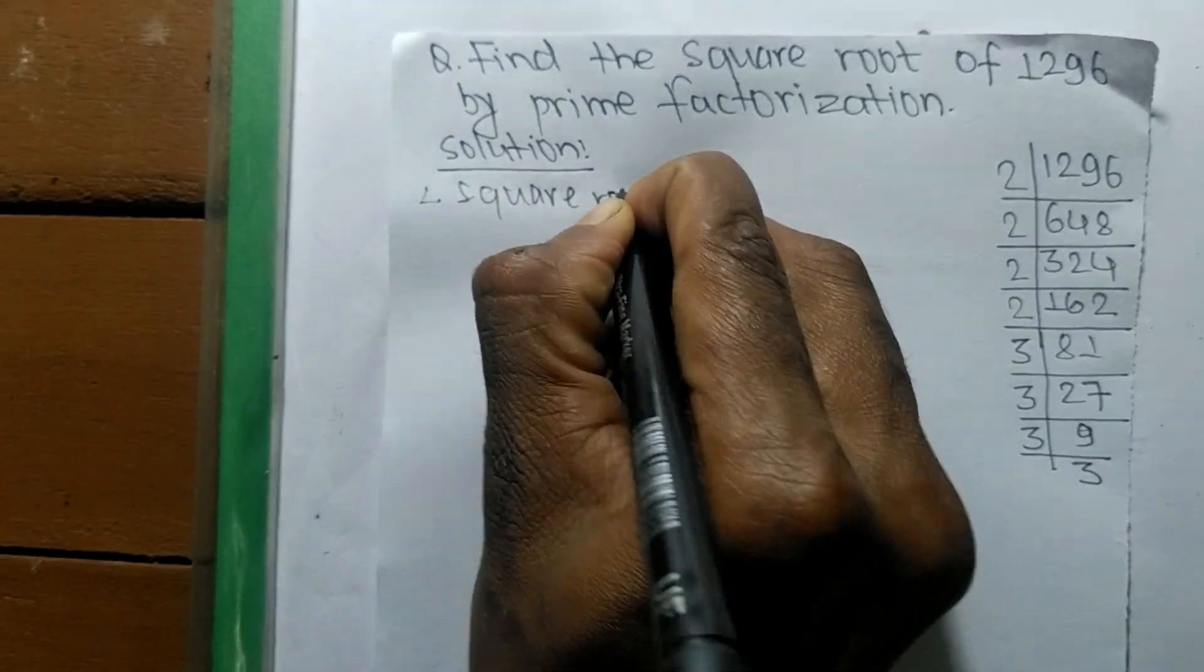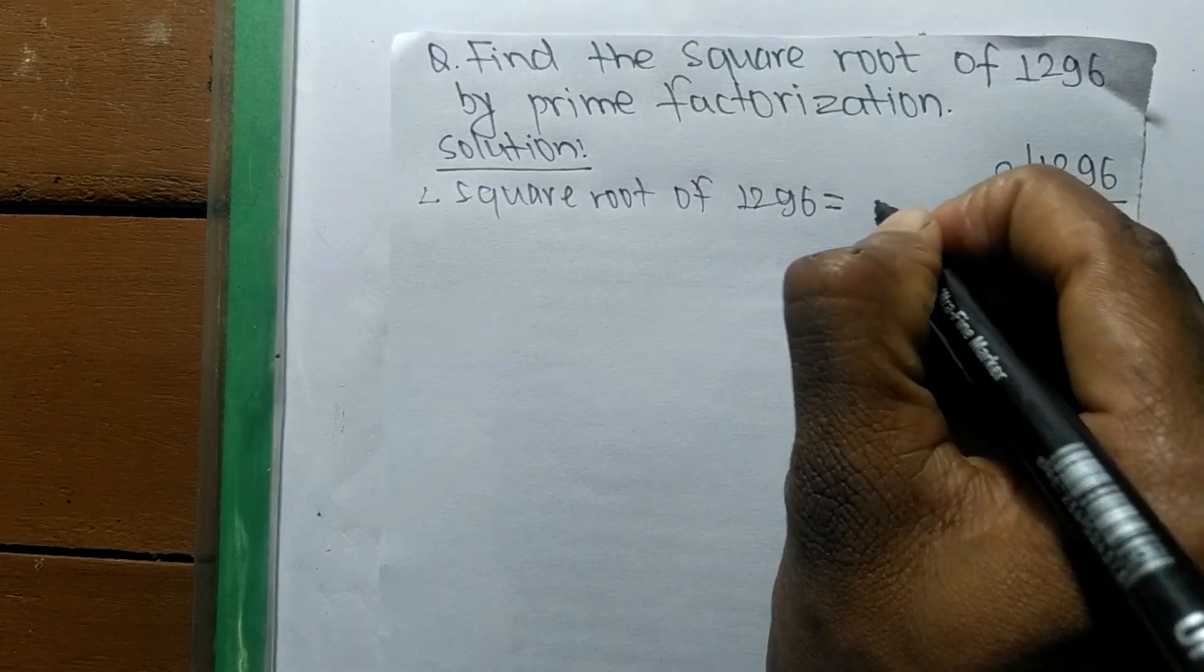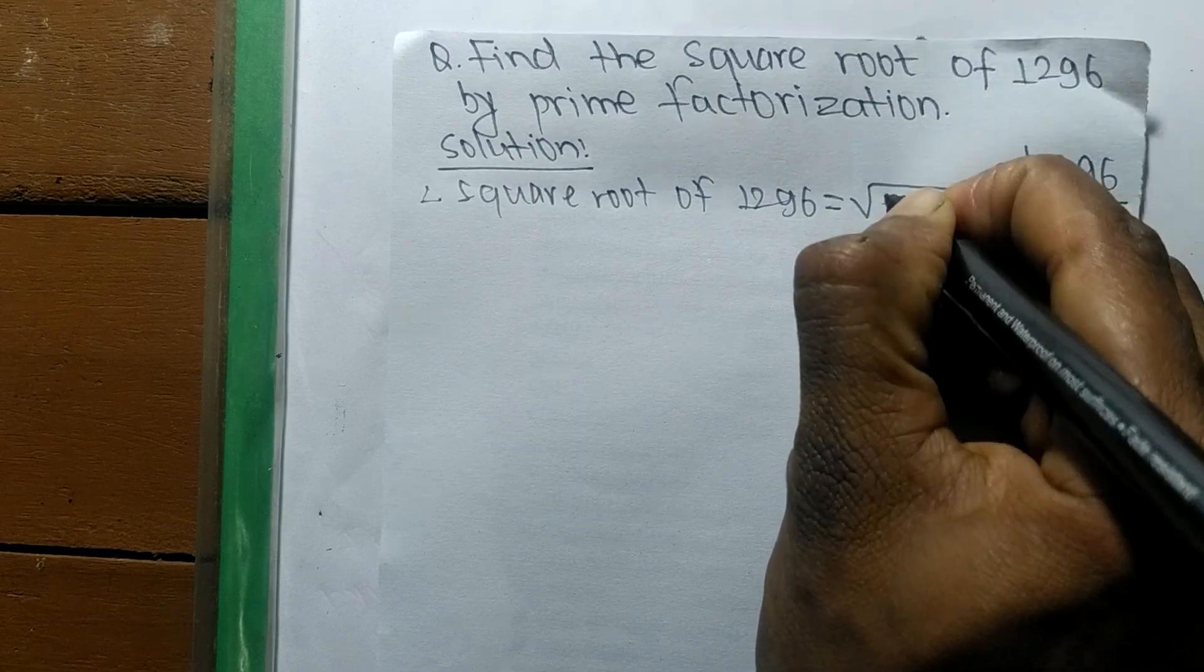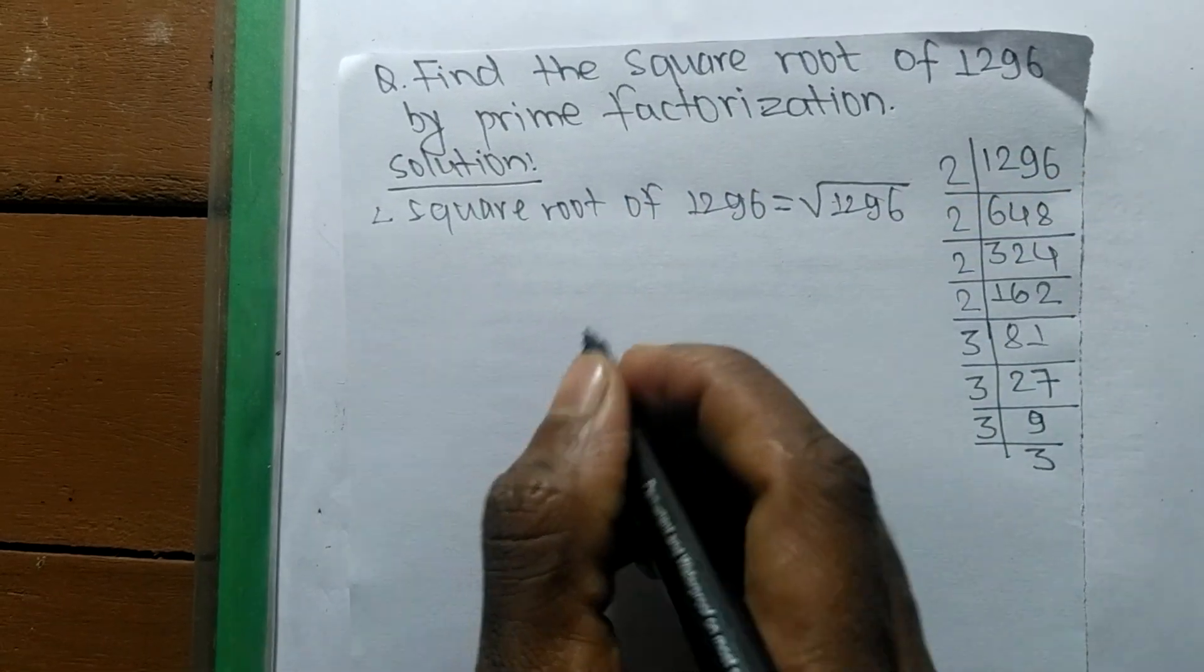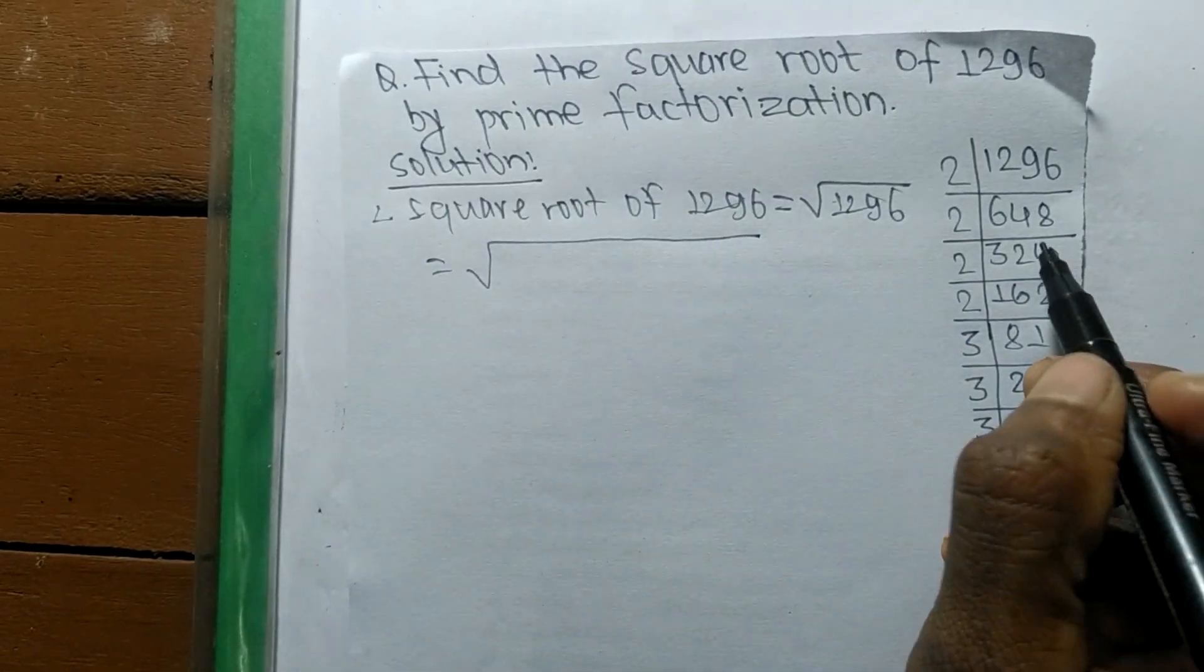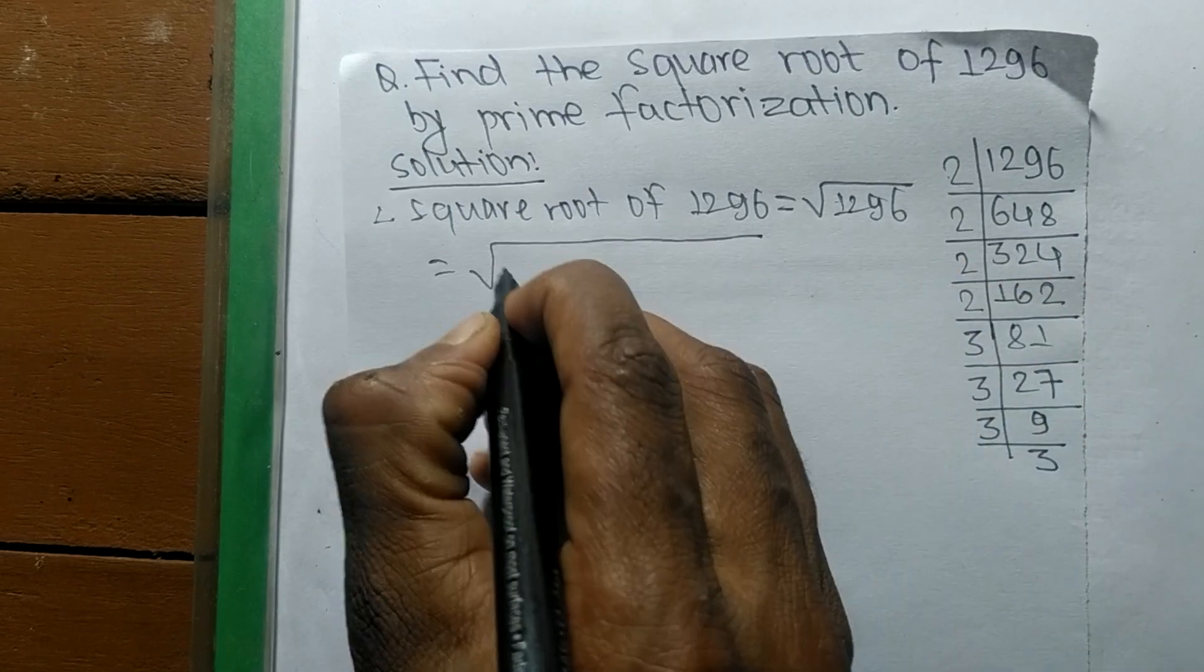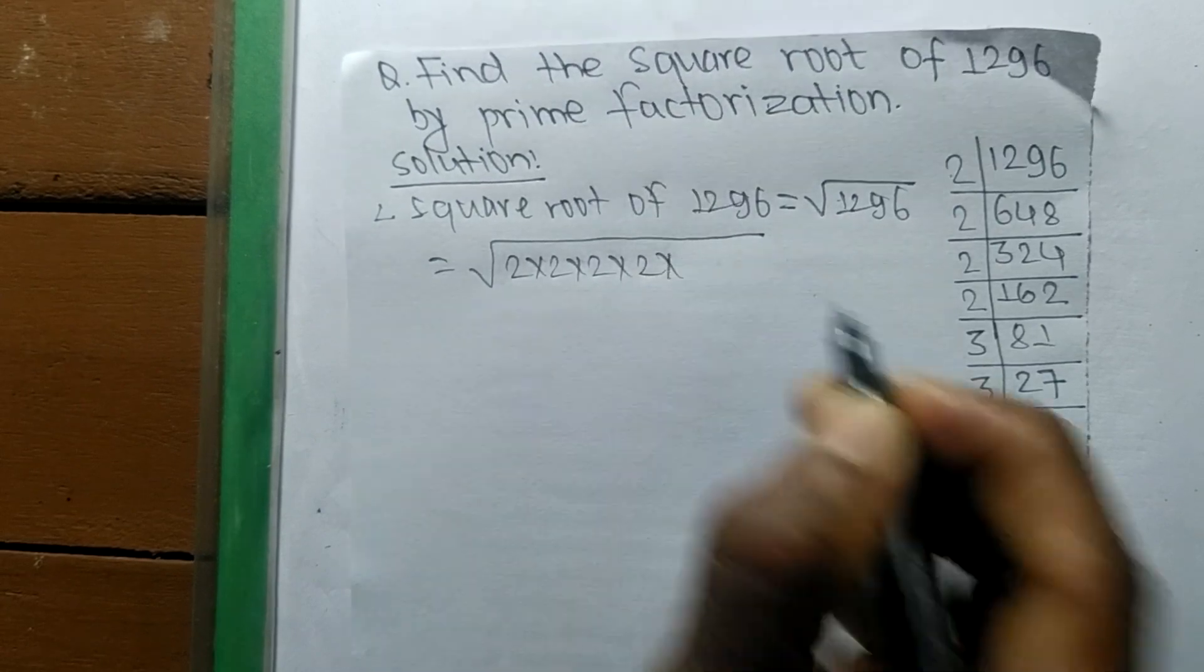Square root of 1296 is equal to - this is the sign of a square root - and we are finding the square root of 1296. So now we write the prime factors of 1296. So it is 1, 2, 3, 4 times 2, so 1, 2, 3, 4 times 2.